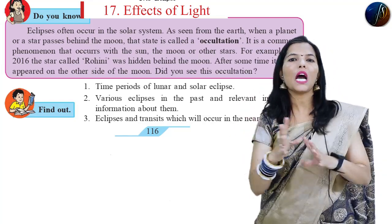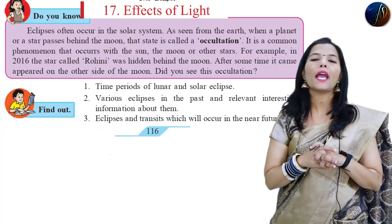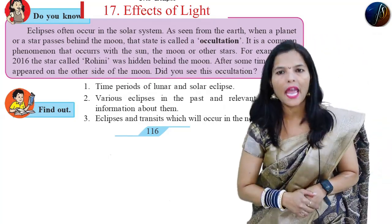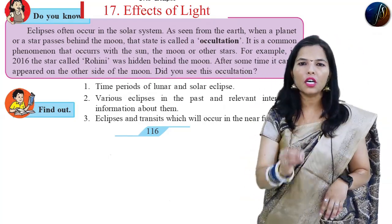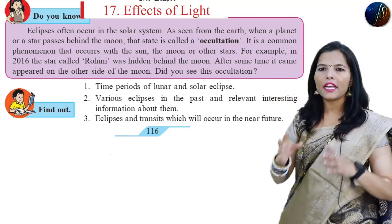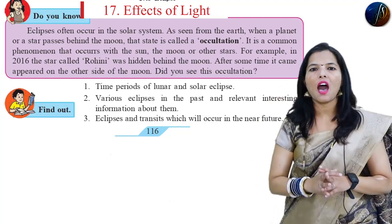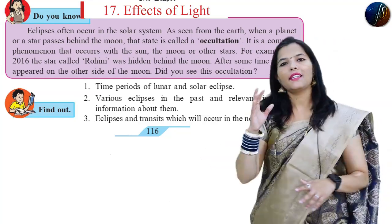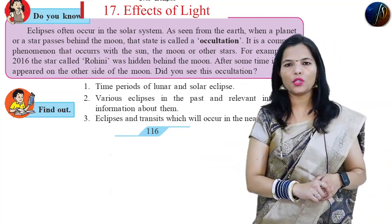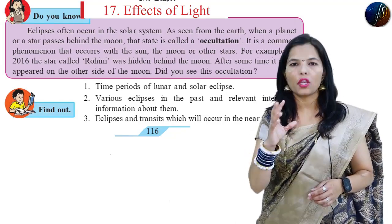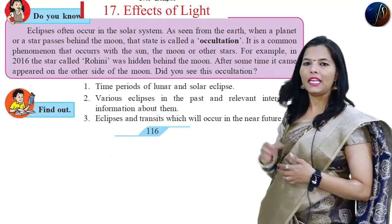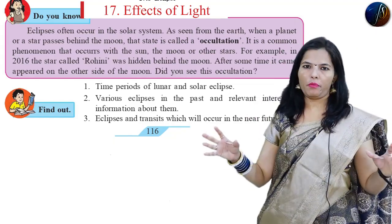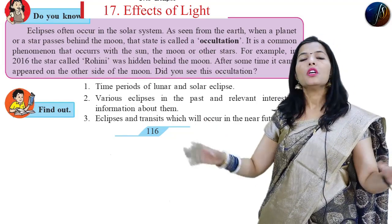Definition: as seen from the Earth, when a planet or the star passes behind the Moon, that type of situation is called as the occultation. So it is a common phenomenon.